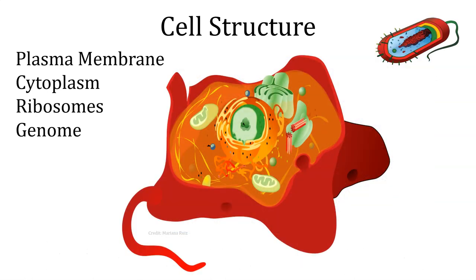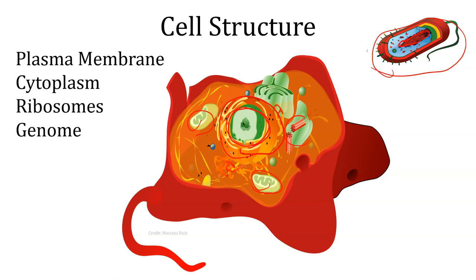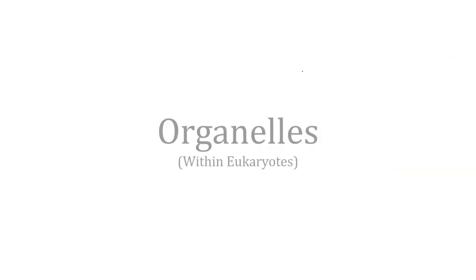Comparing the two: the prokaryote is generally smaller—these are bacterial cells. Generally all they have is a genome consisting of a single chromosome—looking kind of like a big pile of spaghetti—plus some ribosomes in the cytoplasm, but not much beyond that. In a eukaryotic cell, you've got not just a single chromosome but a whole nucleus full of chromosomes, wrapped in its own package called the nuclear envelope, plus all these other organelles doing different kinds of stuff, and it's usually quite a bit bigger.